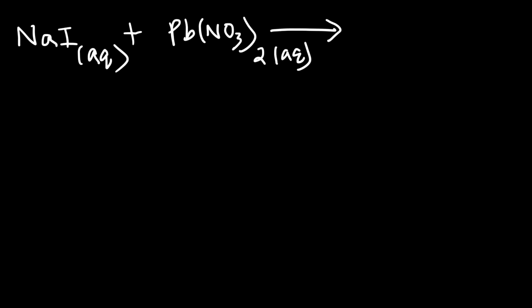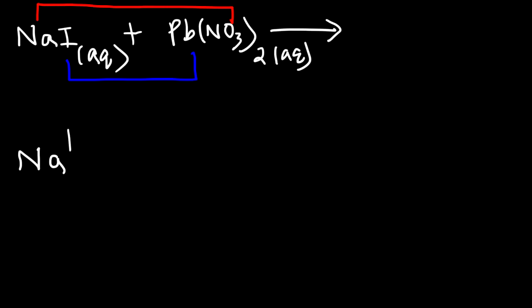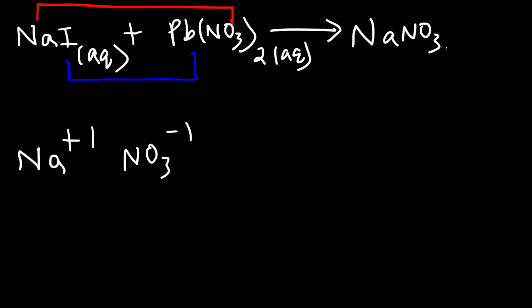How can we predict the products of this reaction? We need to recognize that this is a double replacement reaction. Sodium is going to pair up with nitrate, and the iodide ion will pair up with the lead ion. Sodium has a plus one charge as an ion, and nitrate has a minus one charge. So they will combine in a one-to-one ratio because the magnitude of the charges are the same, and they will form sodium nitrate.